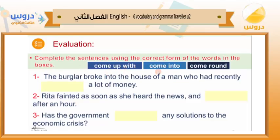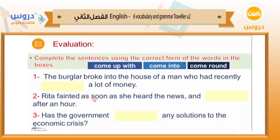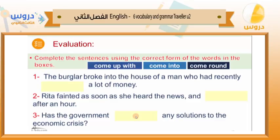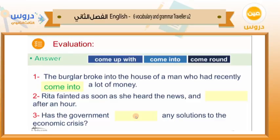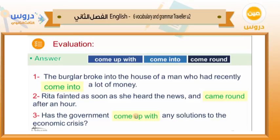One: 'The burglar broke into the house of a man who had recently ___ a lot of money.' Answer: come into. Two: 'Rita fainted as soon as she heard the news and ___ after an hour.' Answer: came around — it means she regained consciousness. Three: 'Has the government ___ any solutions to the economic crisis?' Answer: come up with — meaning has the government thought of any solutions to the economic crisis.